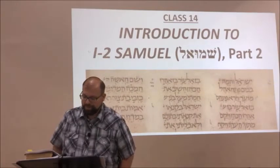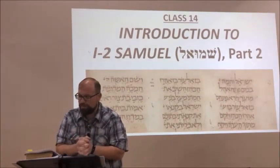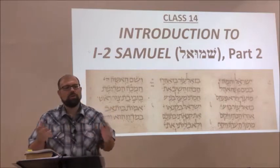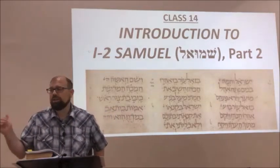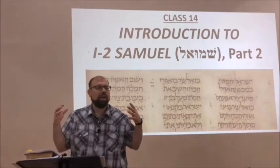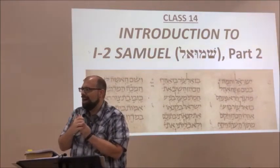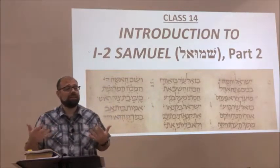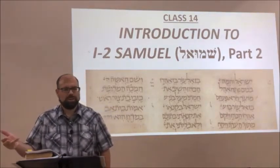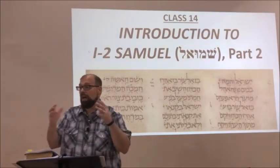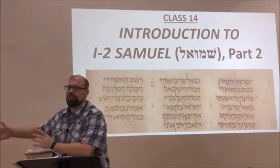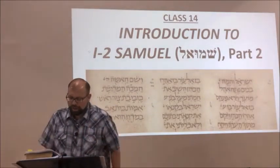Quick review: First and Second Samuel were originally one book in the Hebrew Bible, later split into two in the Greek translation of the Old Testament called the Septuagint, abbreviated LXX. They're part of a four-part compendium with First and Second Kings. In the Septuagint they're called First, Second, Third, and Fourth Kingdoms. The Hebrew Bible still says Samuel, and our English Bible has First and Second Kings.